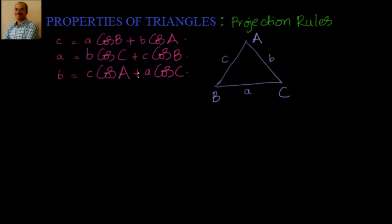Hi, welcome back! Hearty welcome to you. We are going through properties of triangles, and in this session we'll go through projection rules. What are projection rules? If you have a triangle with sides as lowercase a, b, c and with vertices as capital A, capital B, capital C, and the angles are capital A, capital B, capital C, then the projection rules are — let's take one of them. You can see the similarity here.